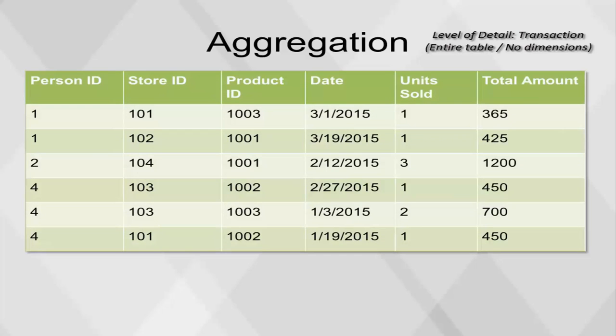The most basic aggregation can be done on the level of detail for the table. In this case, each row is a transaction, and the table as a whole represents sales for phones for quarter one of 2015. The answers can be calculated by applying a formula to a single field, using all the rows in the table.